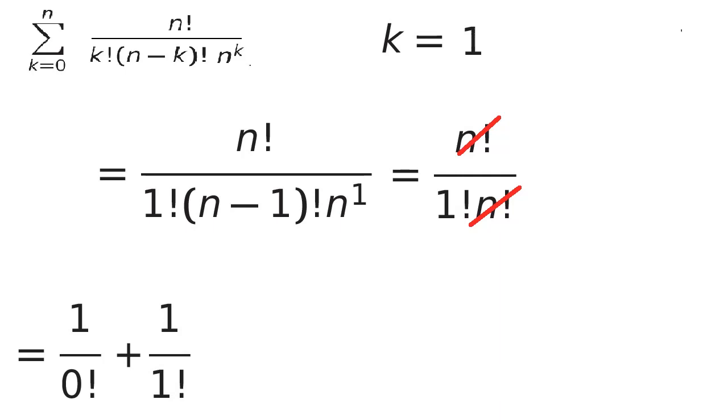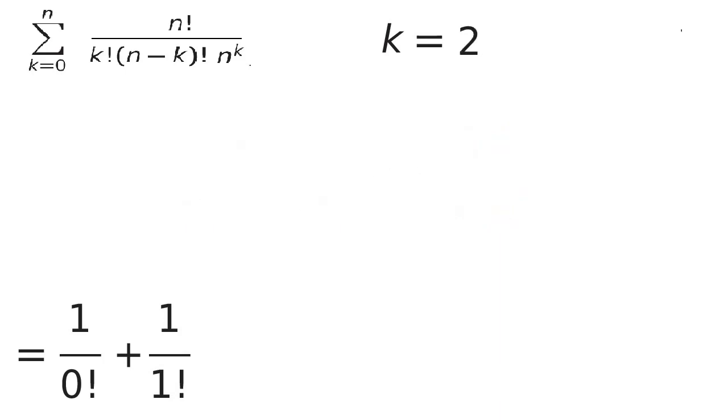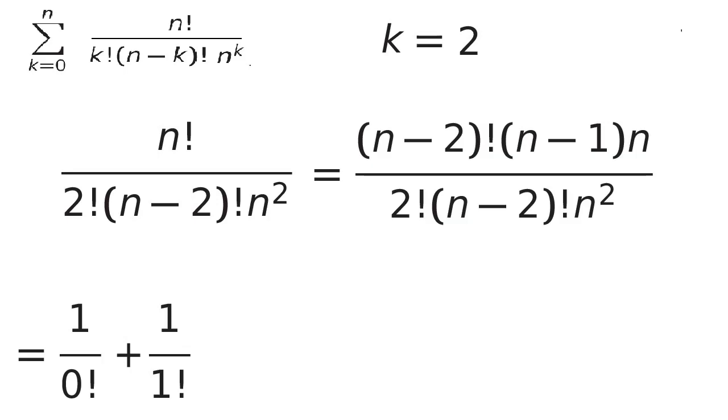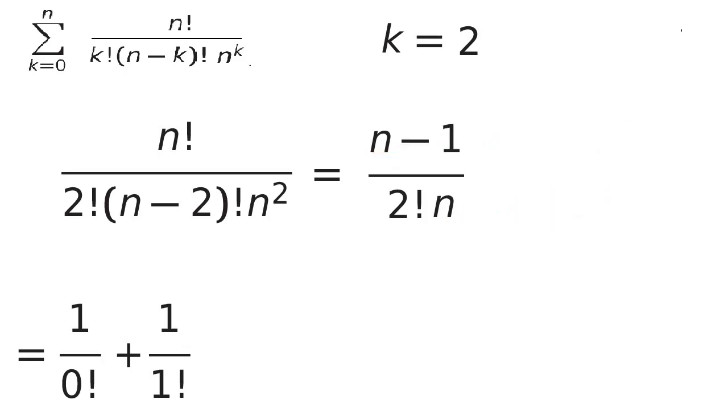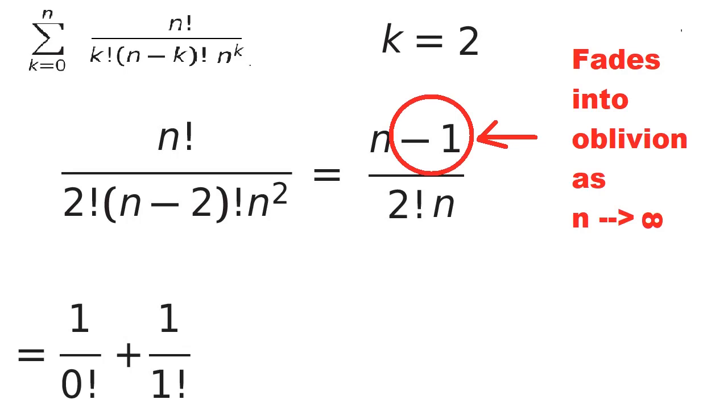It starts to look a little different from k equals 2 onward. Once we are done all our canceling, we have this minus 1 up here, but as n gets larger, it disappears, so we can cancel the n's, leaving us with the factorial in the denominator.